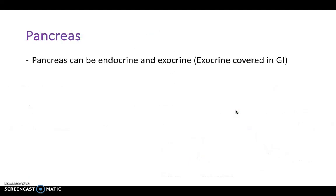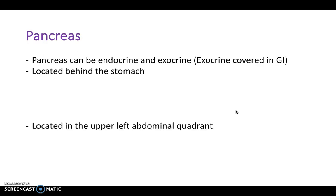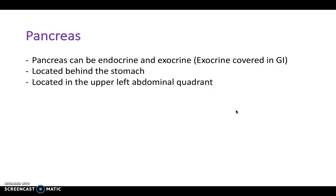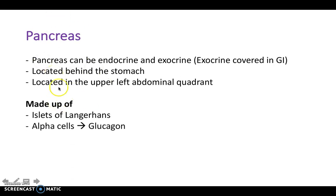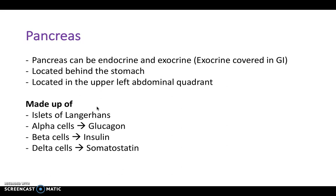Moving on, we can look at the pancreas. The pancreas is an interesting organ because it can be endocrine or exocrine — the exocrine function is covered in the GI block. In terms of endocrine function, it has three cell types to note: alpha, beta, and delta cells. The pancreas is located anatomically behind the stomach in the upper left abdominal quadrant. Within the islets of Langerhans, alpha cells secrete glucagon, beta cells secrete insulin, and delta cells secrete somatostatin.